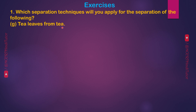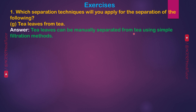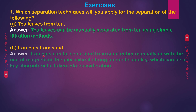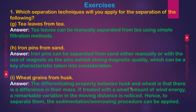G — Tea leaves from tea: tea leaves can be manually separated from tea using simple filtration methods. H — Iron pins from sand: iron pins can be separated from sand either manually or with the use of magnets, as the pins exhibit strong magnetic quality. I — Wheat grains from husk: the differentiating property between husk and wheat is a difference in their mass. If treated with a small amount of wind energy, a remarkable variation in moving distance is noticed; hence the winnowing procedure can be applied.